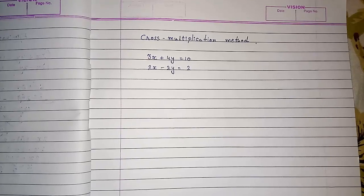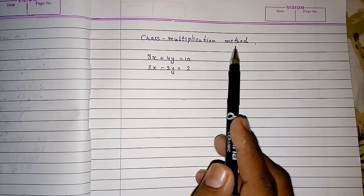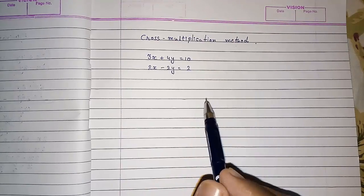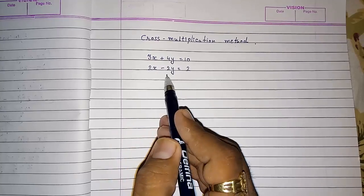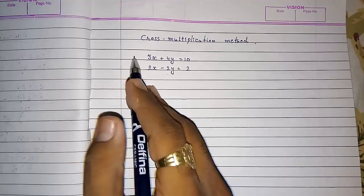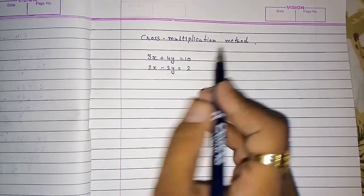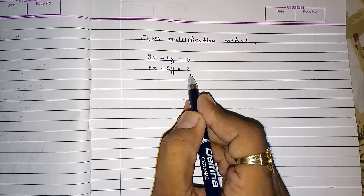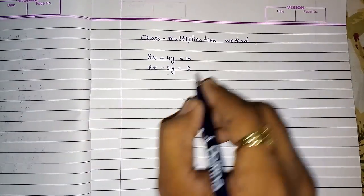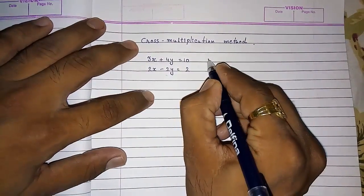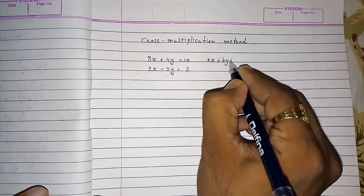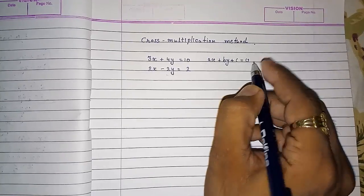Hello friends, today we are going to study the cross multiplication method for solving any pair of linear equations with two variables. When using the cross multiplication method, we first have to arrange the data or equations in standard form. The standard form is: A1X plus B1Y plus C1 equals 0.